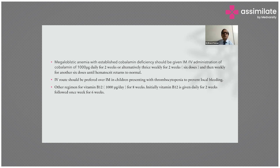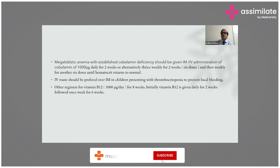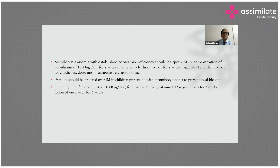Give another 6 doses until hematocrit returns to normal. The intravenous route should be preferred over intramuscular in children presenting with thrombocytopenia to prevent local bleeding. Another regimen for vitamin B12 is 1,000 microgram per day for 8 weeks — initially B12 is given daily for 2 weeks, followed by once weekly for 6 weeks.